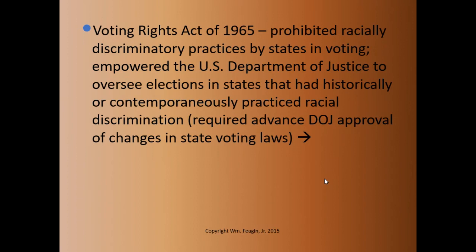So any of these states that we know have a pattern of discriminating or have had a pattern of discriminating — that would include Texas, Mississippi, Alabama, Georgia, Tennessee, most of the southern states certainly, but others too — where there was a clear pattern of discrimination. When they say they want to pass a new law, it's going to have to be cleared by the Justice Department, which is going to have to enter a finding that it's non-discriminatory.